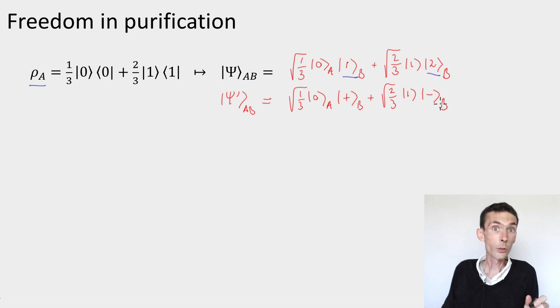So these are two different states. They're orthogonal, but they're two purifications of the same state. They have the same reduced density on system A.